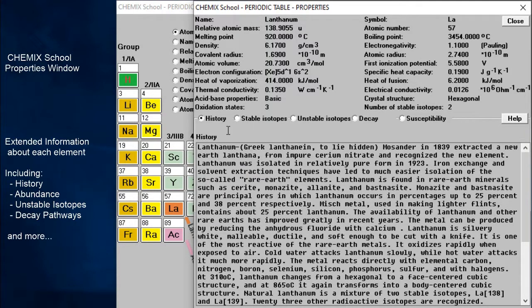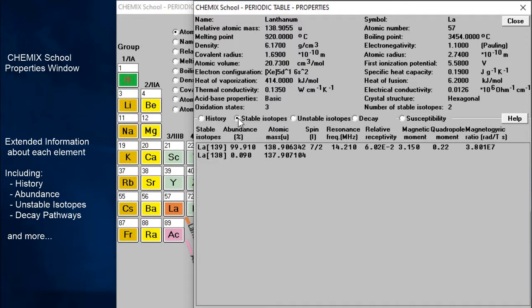The stable isotopes radio button gives us information about mass numbers, abundance, atomic mass, spin, resonance frequency, relative receptivity, magnetic moment, quadrupole moment, and magnetogyric ratio.